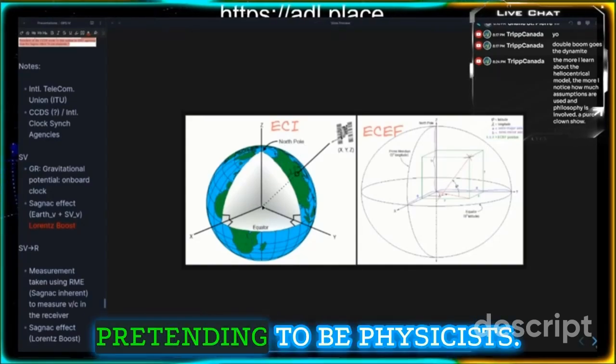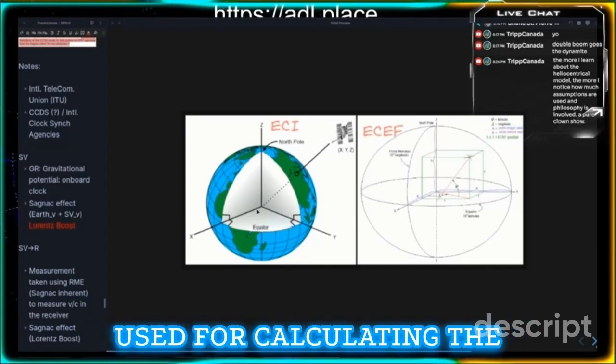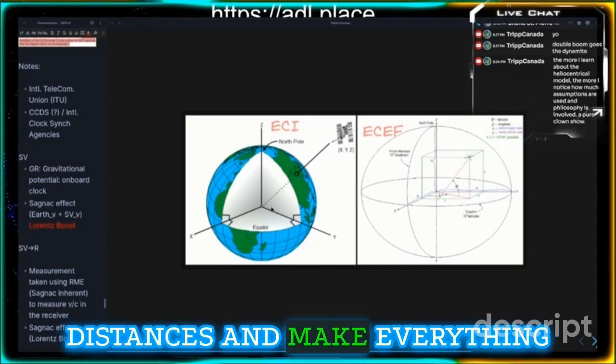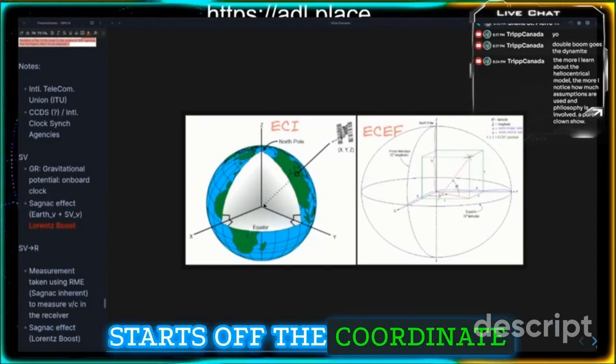It's just a frame of mathematicians pretending to be physicists. It's just used for calculating the distances to make everything proportional where it starts off the coordinate system.